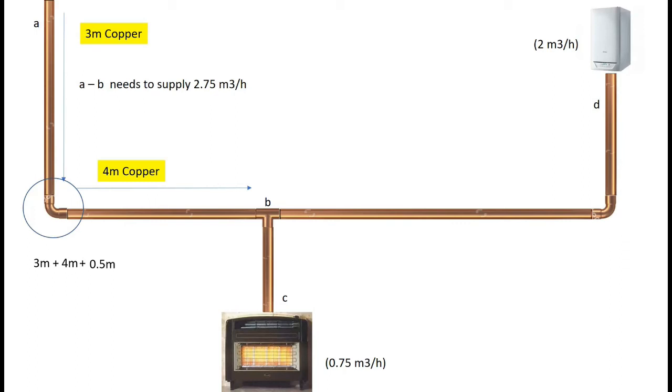Every bend, my apologies, for the elbow. Every elbow and every T piece, you add 0.5 of a meter to your calculation. In this, between A and B, we're not counting the T piece at B. That will be counted later on when we pipe size between B and D. You only use a fitting once in your calculations.